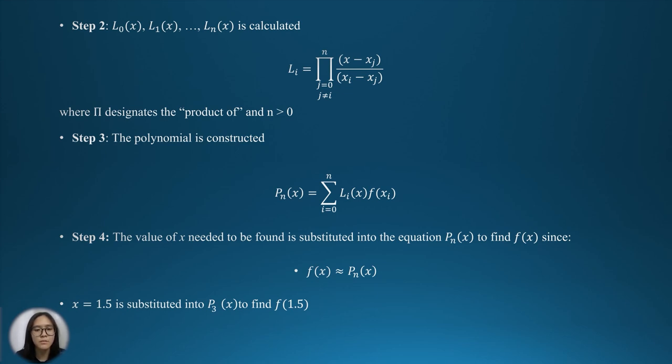For step 3, the polynomial is constructed, where P_n(x) is equal to summation of L_i(x) times f(x_i), where i is equal to 0 until n. Lastly, for step 4, the value of x needed to be found is substituted into the equation P_n(x) to find f(x), since f(x) is approximately equal to P_n(x).